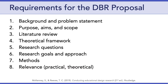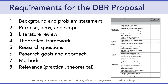So let's start with the DBR proposal. As stated in the assignment, your proposal should cover the eight areas listed here, and in general you have about a page per section, give or take. As a reminder, you can find descriptions of each of these areas in Chapter 8 of McKinney and Reeves. In addition, McKinney and Reeves provide a proposal assessment, seen here on the right, which I'll be using to review your proposals.